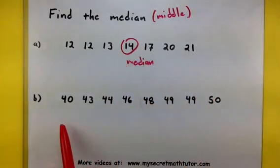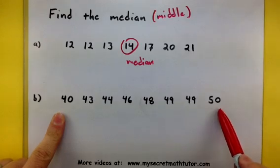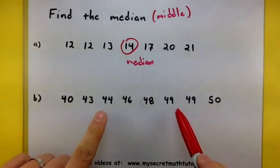In the next example, I have an even number of values and watch how this process works out. So again, I start from the lowest number and the highest number, and I work my way to the middle.